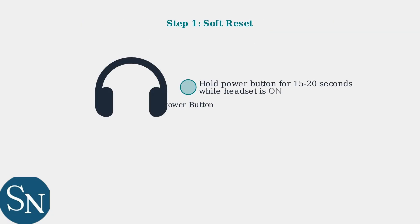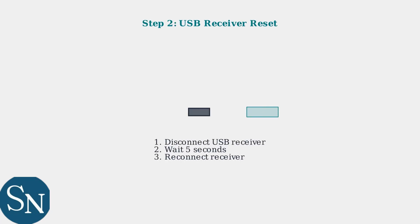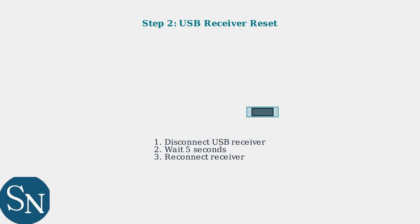The first troubleshooting step is performing a soft reset. This clears the headset's internal memory and resolves most connectivity issues. If the soft reset doesn't resolve the issue, the next step is to reset the USB receiver connection. Disconnect the receiver from your computer, wait a few seconds, then reconnect it.